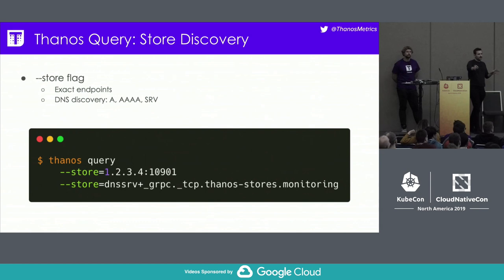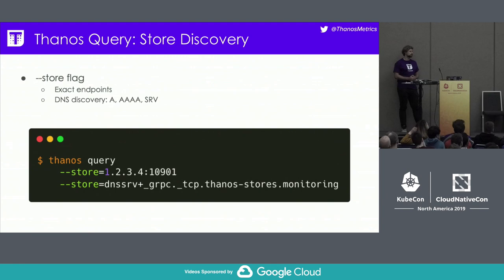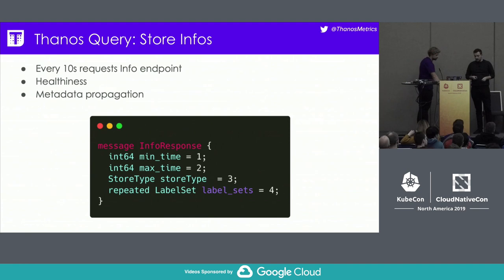Let's walk through the entire workflow from the querier to how it gets all of this data. A primitive setup could be that you have your Thanos querier and you literally just specify the address for your store. But in more dynamic environments where Prometheus servers may appear and disappear — we're at KubeCon — you may want to use one of our discovery mechanisms like DNS discovery, which can automatically make sure stores that appear are added to the querier.